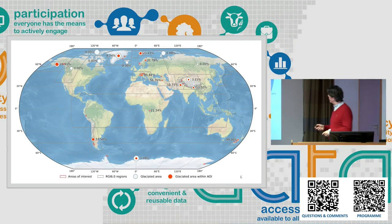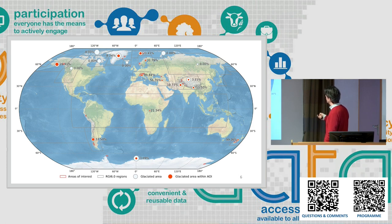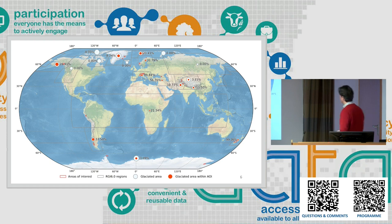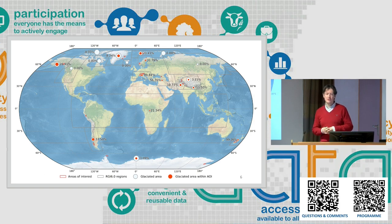At the global level, this is the map of the areas included so far in the dataset. We have almost all the glaciated area in south-central Europe, mostly the Alps, but also a lot of data from northern Europe, Alaska, and the tropical area. We are trying to collect as much data as possible from different parts of the world to include the diversity of glacier characteristics and the surrounding environment.